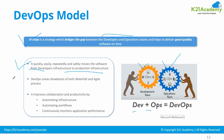DevOps addresses the drawbacks of both the waterfall and agile processes. It improves collaboration and productivity by automating the infrastructure, automating the workflow, and continuously monitoring application performance. It takes care of all aspects of the DevOps cycle and ensures that your developed application is delivered to production or different environments within no time.